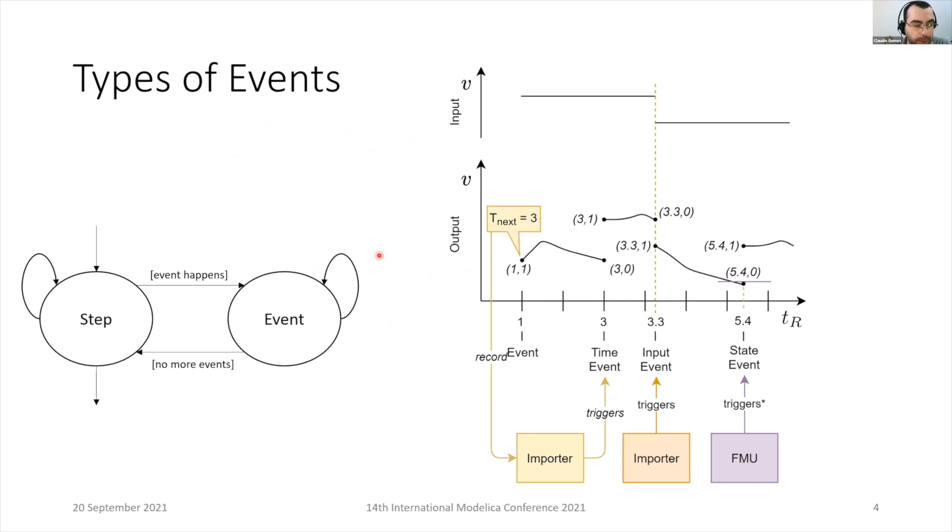There are three types of events that cause an FMU to be moved from the step mode into the event mode. The first type of event is a timed event where at some point in the simulated time,